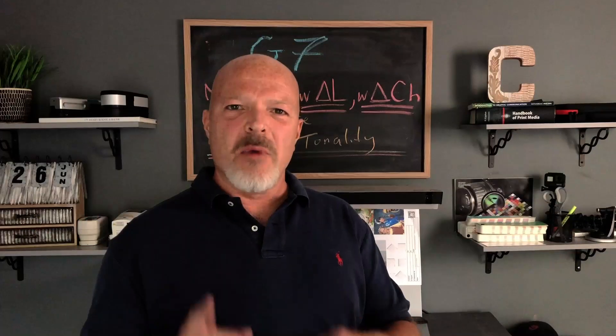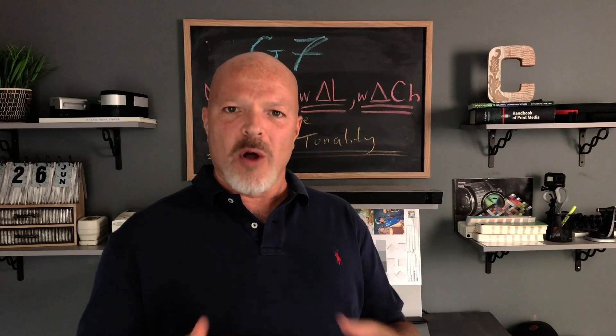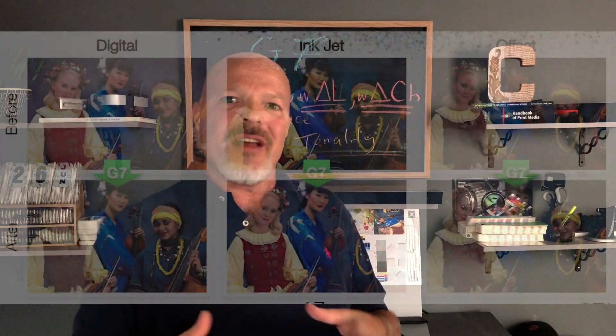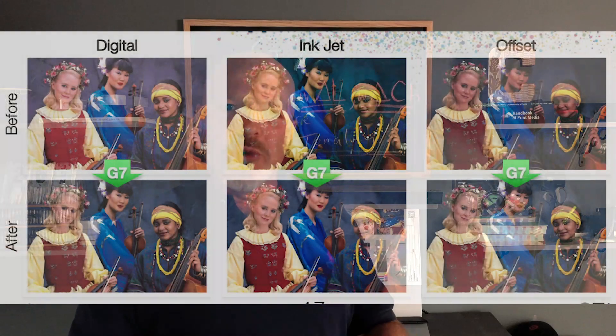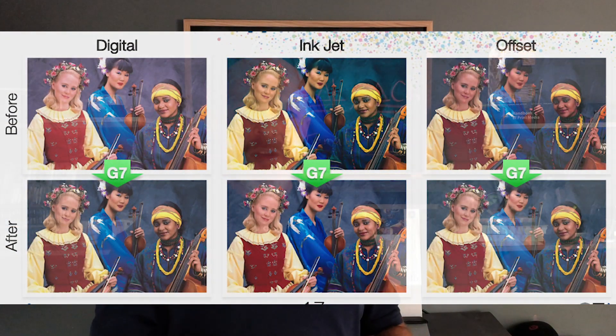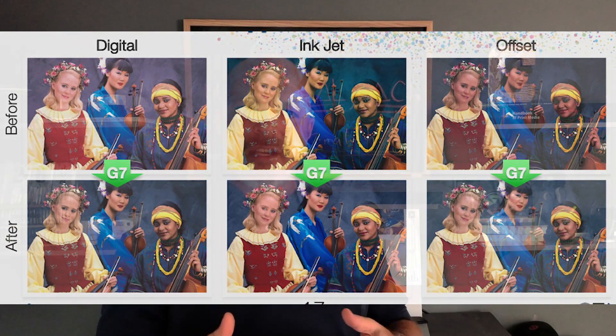Before we get started, I want you to remember that G7 is much more than a calibration method used to align multiple printers, multiple presses, or even multiple facilities to achieve a similar visual neutral appearance.